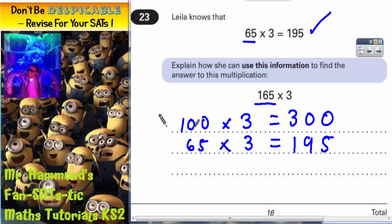So you've got 3 lots of 100, you've multiplied the 3 by the 100, and you've already got 3 lots of 65. So what we need to do now is add these two answers together, and that will give us 3 lots of 165.